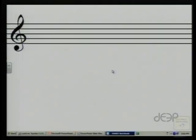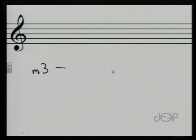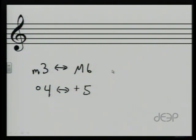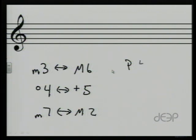Let's do a little test and see how well you've followed. What's the inversion of a minor third? Thirds invert to sixths; minors invert to majors — so minor thirds invert to major sixths, all the time. What's the inversion of a diminished fourth? Fourths invert to fifths; diminished inverts to augmented. What's the inversion of a minor seventh? Sevenths invert to sixths; minor inverts to major. What's the inversion of a perfect fourth? Always a perfect fifth.